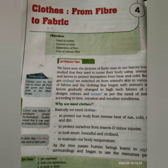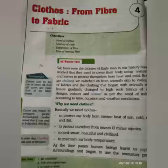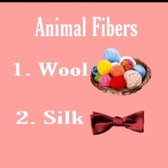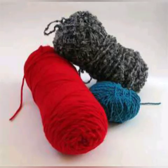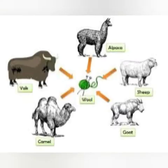The main animal fibers used for various purposes are wool and silk. Wool and silk are the two animal fibers which are mainly used. The first animal fiber is wool. Wool is a fiber obtained from the hair of various species of sheep and some other animals.